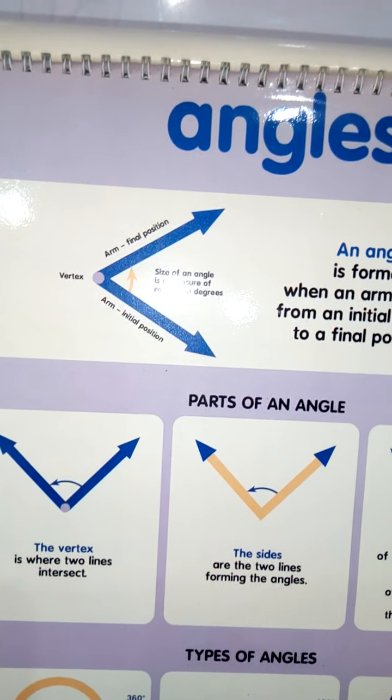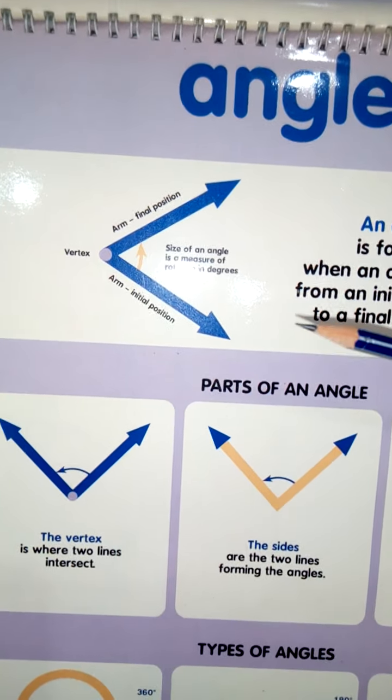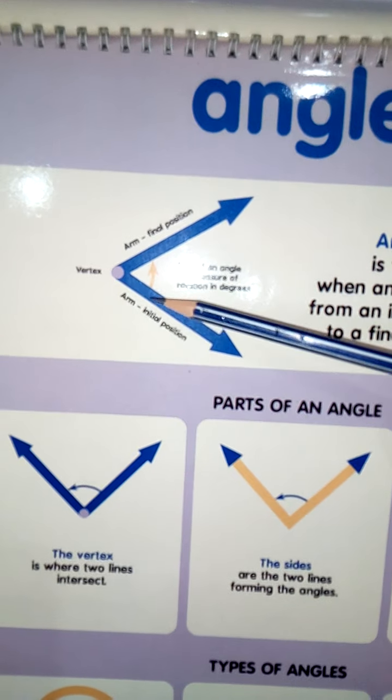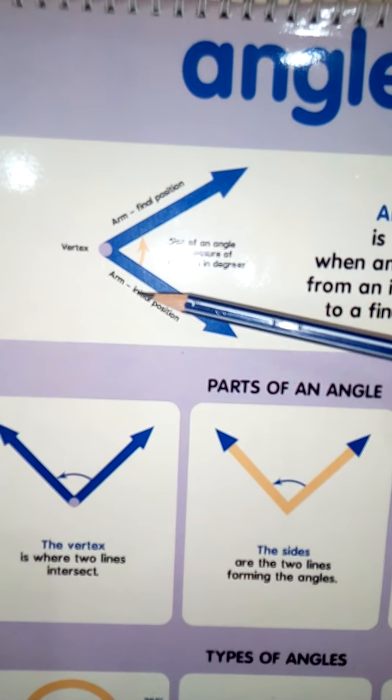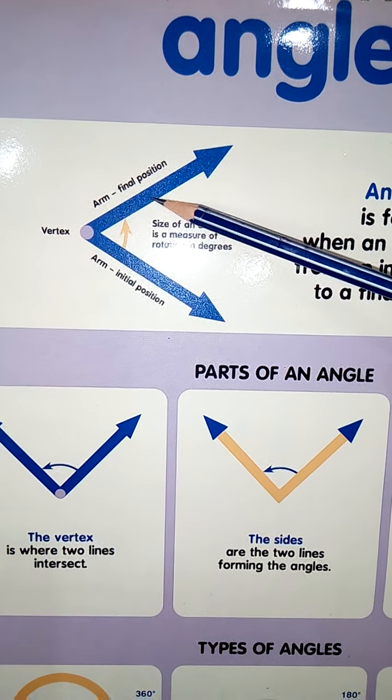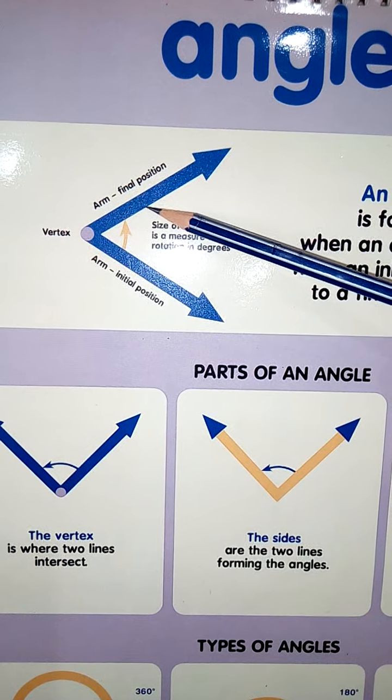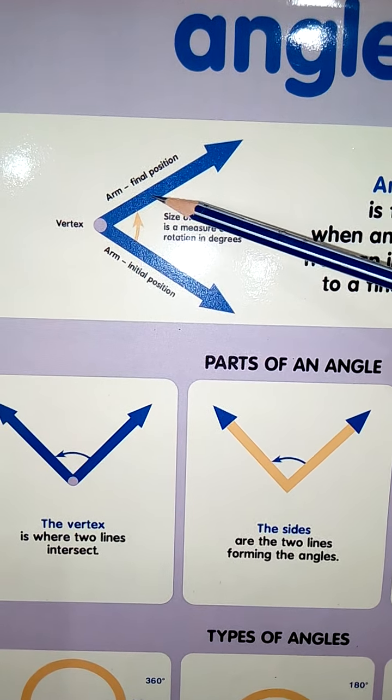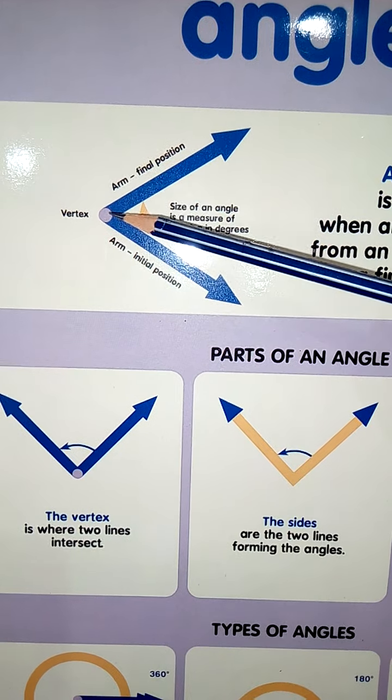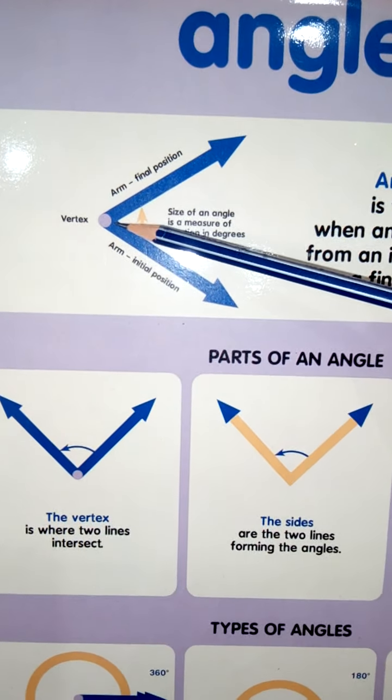Now, after joining these two rays together, they also have a special name. Now, they are known as arm, arm number one and this is arm number two. Now, what we are going to do? We are going to move these arms together but make sure we are going to move in such a way that they will be joined over here on vertex.